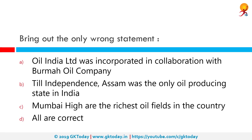Bring out the only wrong statement — all of these statements are correct. All India Limited was incorporated in collaboration with Burma Oil Limited by the President of India. They also commissioned a gas-based power plant in Digboi in Assam, which was pre-independence in 1866. Later, during construction of the Dibrugarh-Ledo railway, oil was discovered at Digboi in 1882, again pre-independence.